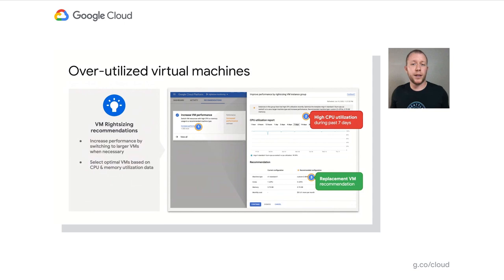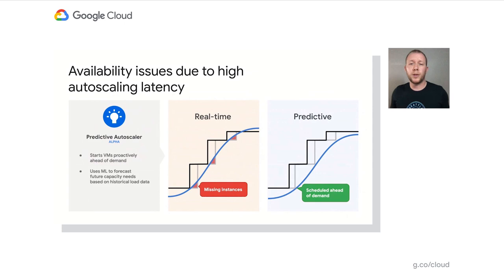Now Steve is thinking about how to best deal with the spikes in demand, just like the one they saw over the weekend going forward. He already relies on Compute Engine real-time autoscaler, but it doesn't work well for his monolithic Java application, which takes more than five minutes to initialize. This autoscaling latency contributes to the availability issues that some of his users have reported. So he enables predictive autoscaler, which forecasts future capacity needs based on historical load data, and starts up VM instances ahead of upcoming demand. Steve just took another manual task off his plate.